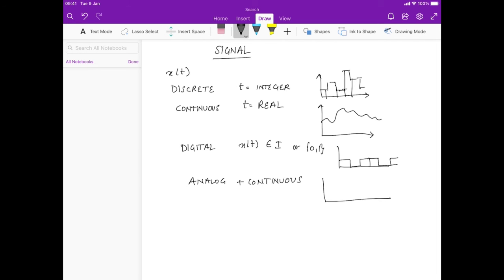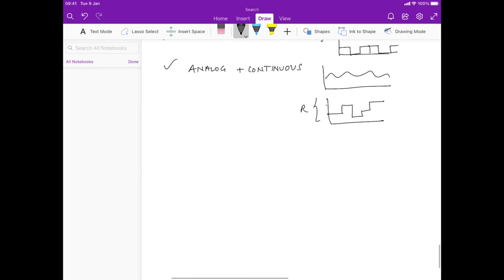So analog and continuous would be something like this, whereas analog and discrete would be, you know, it's taking on these values, but it's defined at every point in time, but these points over here could be arbitrary. They don't need to be integers; this one is on the real line. So depending on whether the x or the y-axis is integer or real, we have discrete or continuous, and here digital and analog. Okay, so that's just to get the basics going.